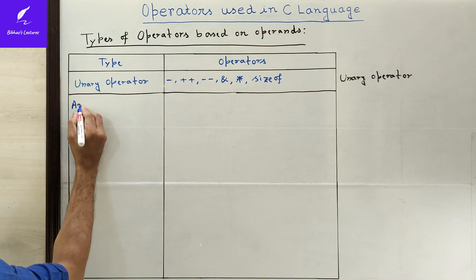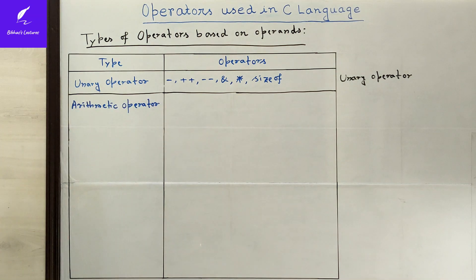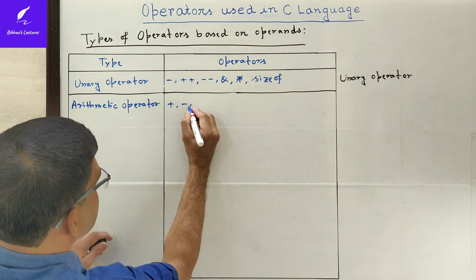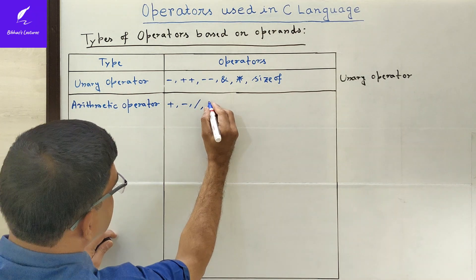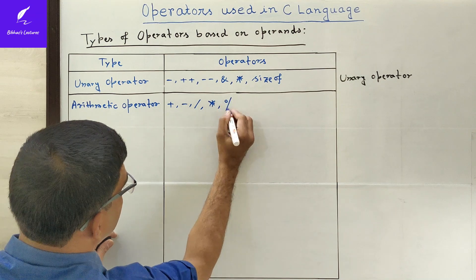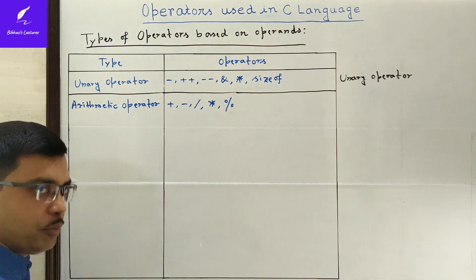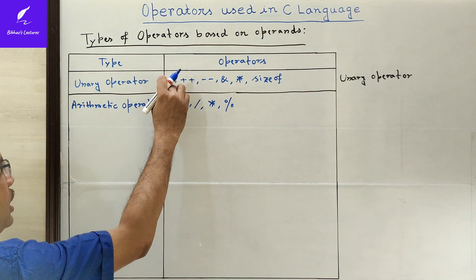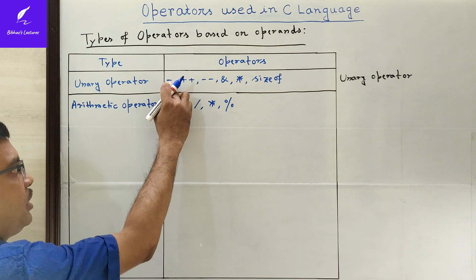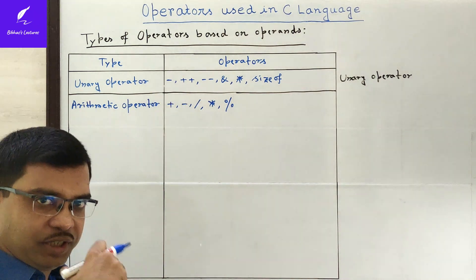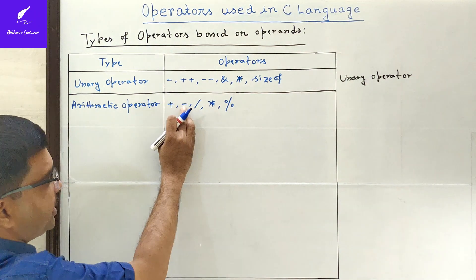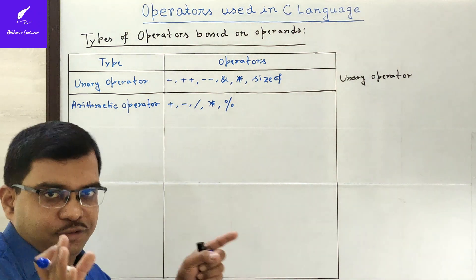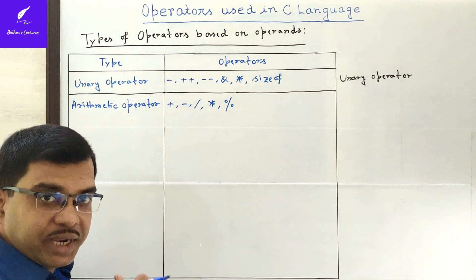The first type of binary operator is the arithmetic operator. Examples of arithmetic operators are: plus (+), minus (-), division (/), multiplication (*), and modulo division (%). These five operators are used in C as arithmetic operators. Note that the unary minus operates on a single operand, whereas the binary minus requires at least two operands.